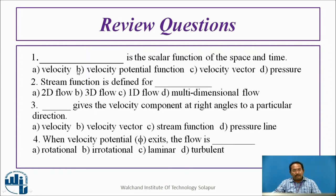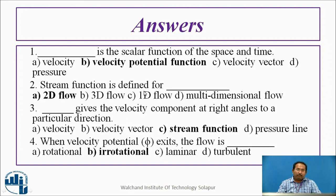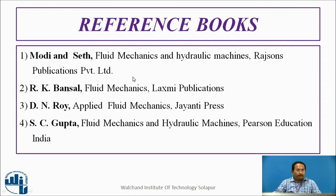Here are four objective-type questions. Take a pause and go through these questions — they are very simple based on what we have just studied. The answers are: velocity potential is a function of space and time; stream function is defined for 2D flow only; stream function gives the velocity component at right angles to a particular direction; and when velocity potential exists, the flow is irrotational. These are some reference books — please go through them.